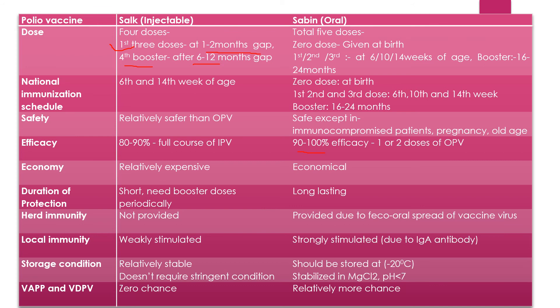Local immunity: IPV weakly stimulates local immunity, while OPV strongly stimulates it due to IgA antibodies. Storage: OPV should be stored at minus 20 degrees Celsius, stabilized with MgCl2 and a pH less than 5, while IPV is relatively stable and does not require such conditions. VAPP (vaccine-associated paralytic poliomyelitis) and VDPV (vaccine-derived polioviruses): there is zero chance with IPV, while OPV carries a relatively higher risk.